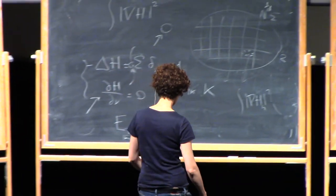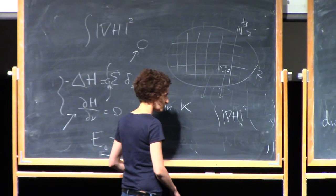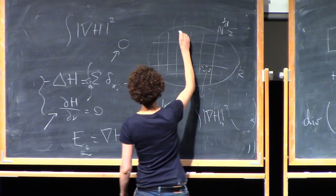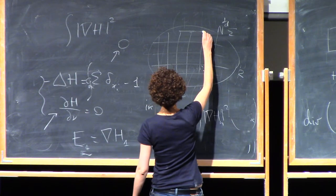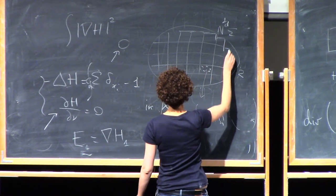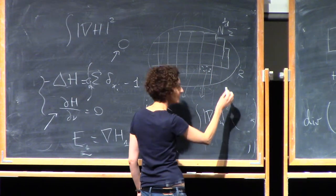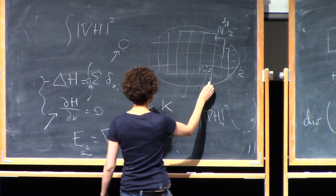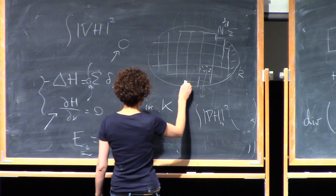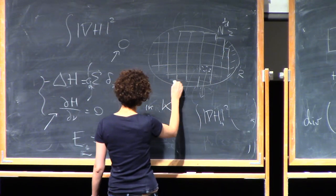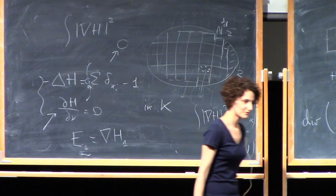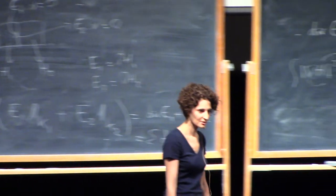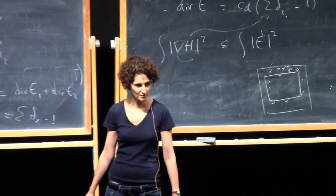These boundary regions have to be handled separately. There is a boundary layer — you cannot tile your set exactly by cubes, so there is going to be a boundary layer. This boundary layer is negligible with respect to the volume.